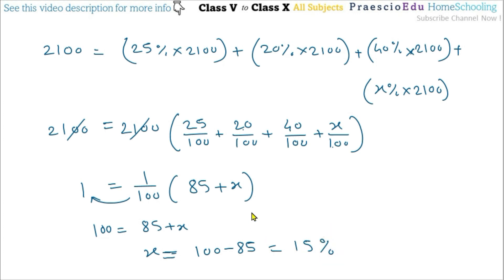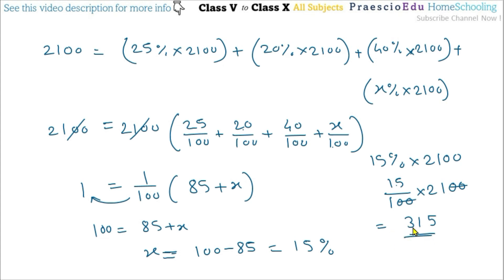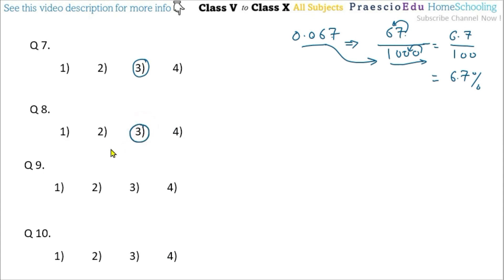Now 15% of 2100: 15 divided by 100 multiplied by 2100. After cancelling zeros, 15 multiplied by 21 = 315. So 315 trees are betel nuts, given in option number 3. For question number 8, option number 3 is correct.